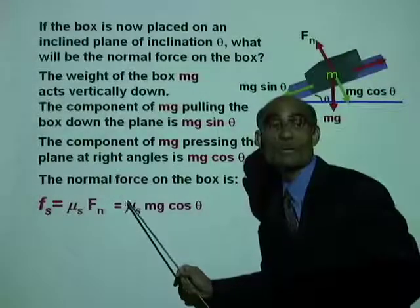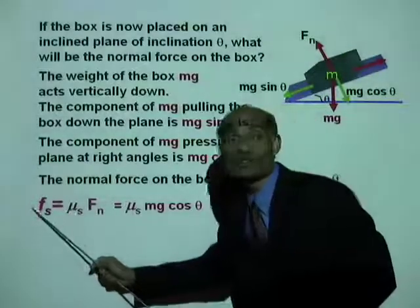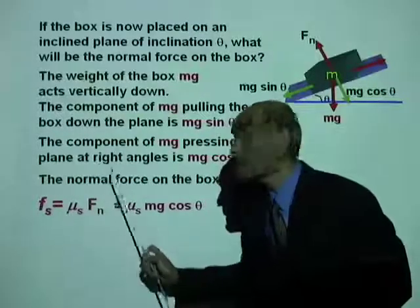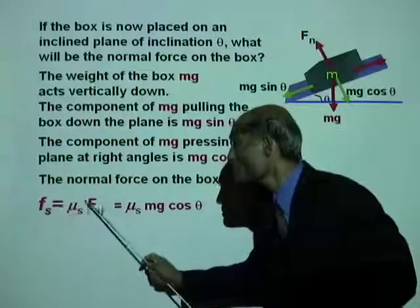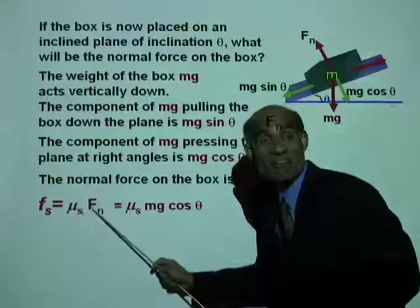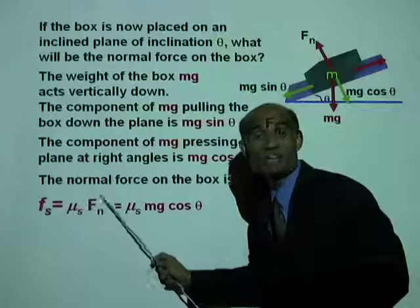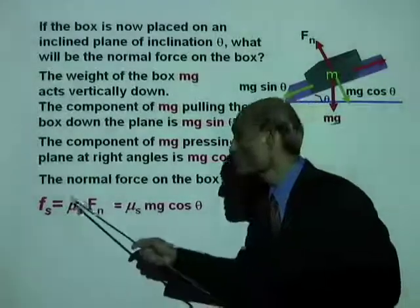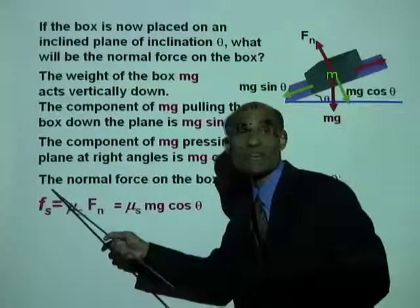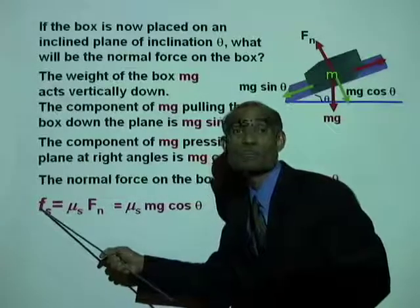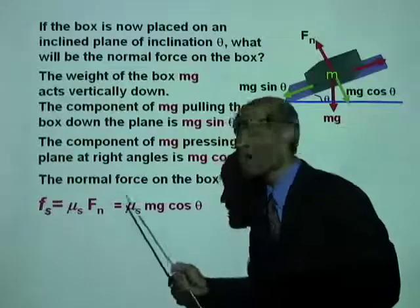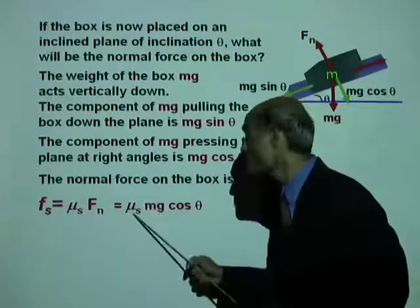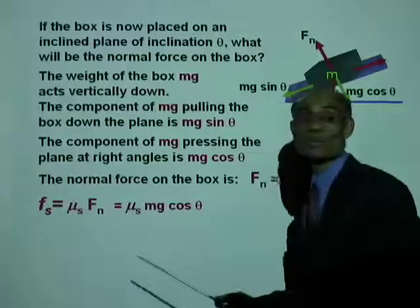That means the equation for the force, in the case of an inclined plane, becomes Fs equal to mu S times Fn. And that Fn in this case is mg cos theta. So the force of static friction between two surfaces inclined at an angle theta to the horizontal is mu S times mg cos theta.